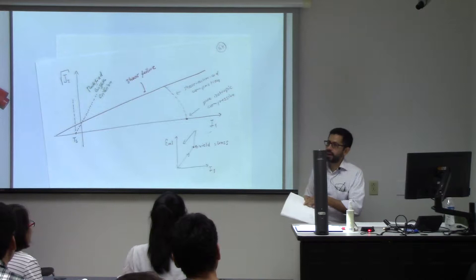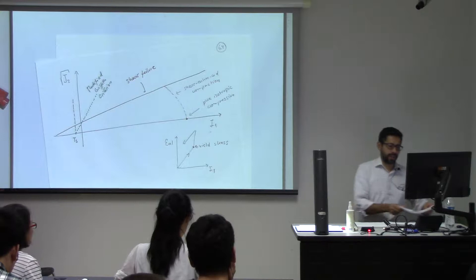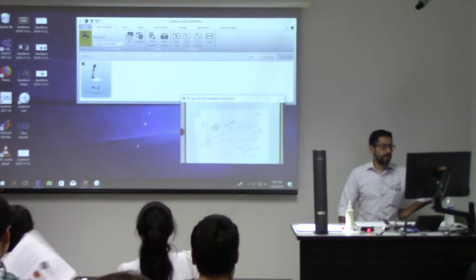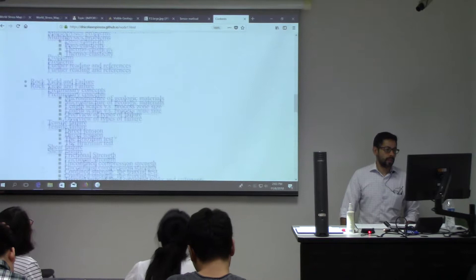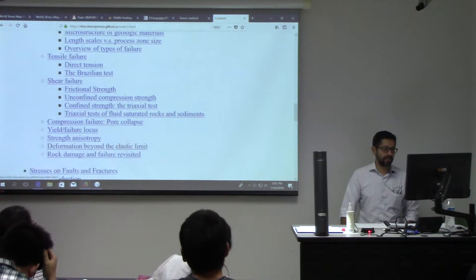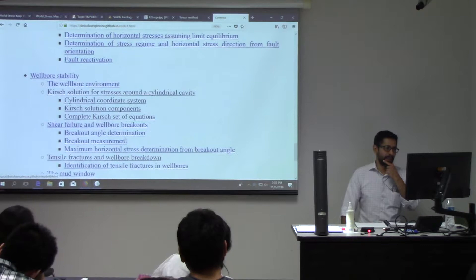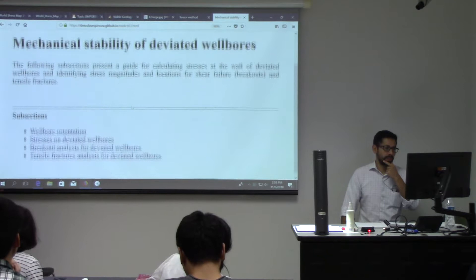It's just a lot of work, right? But it's just coding. I sent you an email about this, and now I have all the equations here. It's probably 50 lines, something like that — maybe a bit more. Okay, let's go to deviated wellbores.